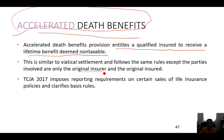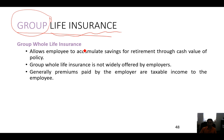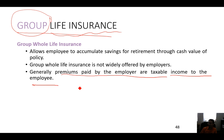Group life insurance is more common. When we see 'group,' it means it's from the employer. Premiums are paid by the employer and are taxable income to the employee, because that's considered compensation. At Winthrop, they offer something like an annual renewal term.